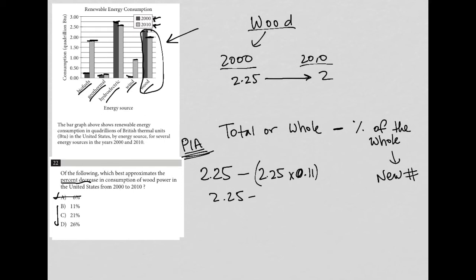2.25 times 0.11 is 0.2475, which I'd say for our purposes can be rounded to 0.25. And we would see that 2.25 minus 0.25 actually does equal 2, and even if we hadn't rounded it, it'd be very close to that too.